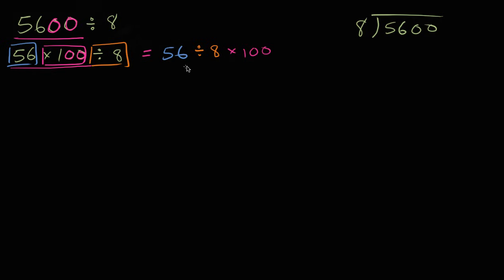Well, it's pretty straightforward if you remember your multiplication tables, what 56 divided by 8 is. 8 times 7 is 56. So this right over here is going to be 7. And so then you're just left with figuring out what 7 times 100 is. Well, that's going to be 7 hundreds, or 700. And you're done.